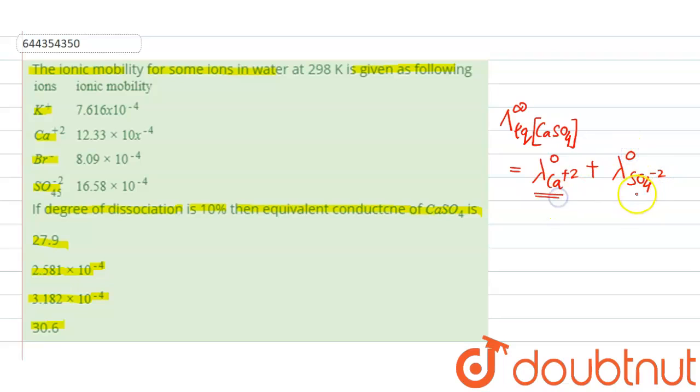So the values are 12.33 into 10 raised to the power minus 4 plus 16.58 into 10 raised to the power minus 4. So this will give us 29.91, sorry, 28.91 into 10 raised to the power minus 4 siemens centimeter square per mole.